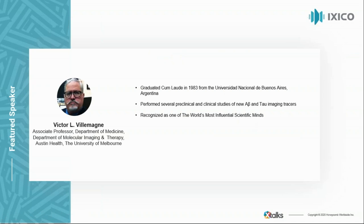Our first speaker is Dr. Victor Vellemain, who graduated cum laude in 1983 from the Universidad Nacional de Buenos Aires. He continued postgraduate studies at the Division of Nuclear Medicine at Johns Hopkins. Since 2003, joining the NeuroGeneration Group in Melbourne, he has performed several preclinical and clinical studies of new AB and tau imaging tracers. He has authored over 300 original research publications and received the DeLoyne Prize in Neuroimaging in 2013, the Christopher Clark Award in 2014, and the Call Lesson Award in 2018. Since 2016, he has been recognized as one of the world's most influential scientific minds, with citations in the top 1% in neuroscience.